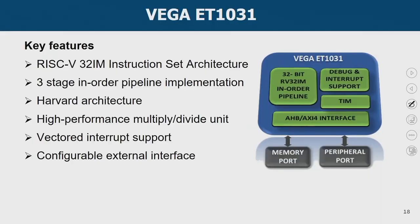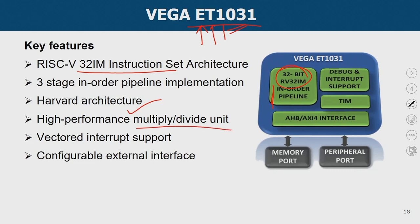The Vega ET series belongs to the embedded class: it is a 32-bit single-core processor with a 3-stage in-order pipeline, supporting only RISC-V 32-bit IM instruction set — integer and multiplication/division operations — with no floating-point unit. It uses the Harvard architecture, has a multiplication and division unit, supports vectored interrupts where the interrupting device provides a number to identify which interrupt service routine to execute, and has a configurable external interface for connecting to memory, higher-level memory, and peripheral ports.